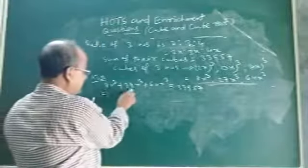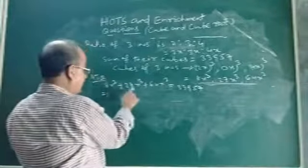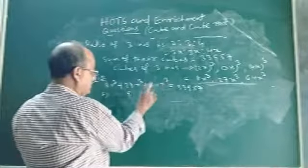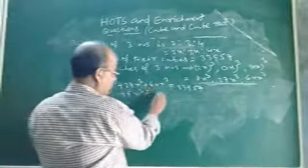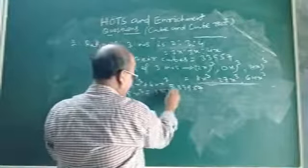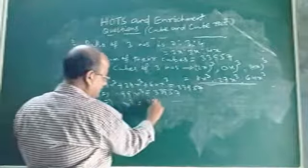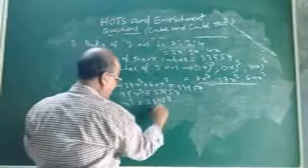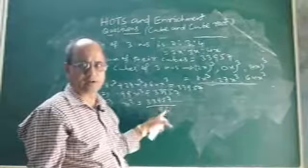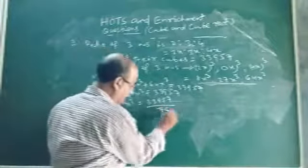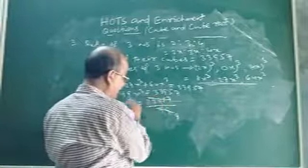Adding the coefficients: 8 + 27 + 64 = 99. So 99x³ = 33957. To find x³, divide 33957 by 99. Do it by cancellation — cut by 11, it becomes 3087 divided by 9. Then divide: 9 × 3 = 27, then 9 × 4 = 36, carrying over... We get x³ = 343.